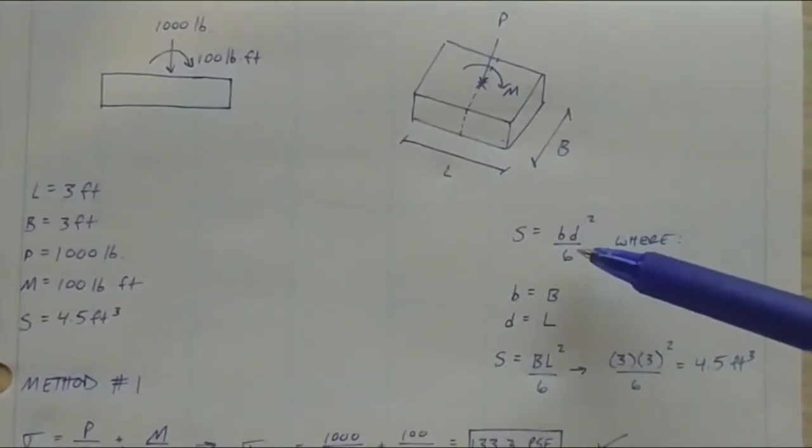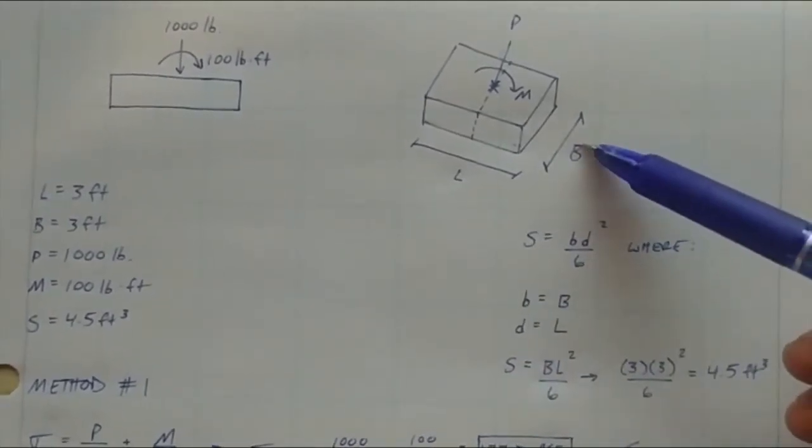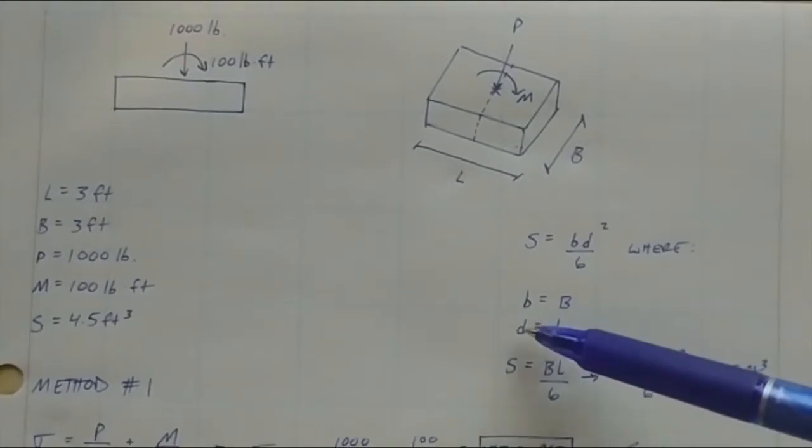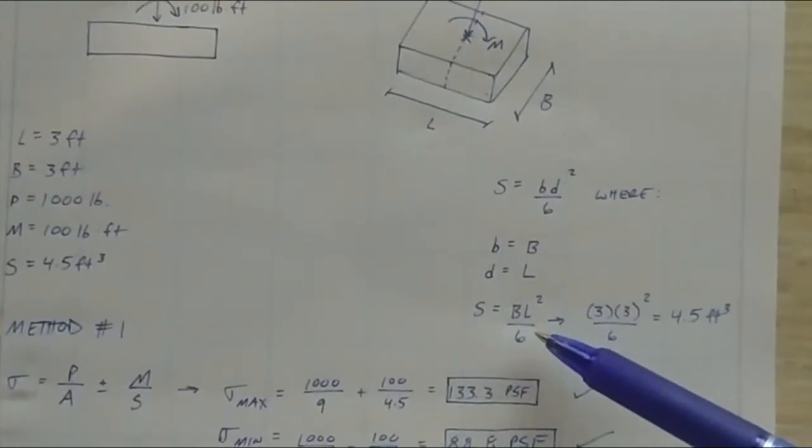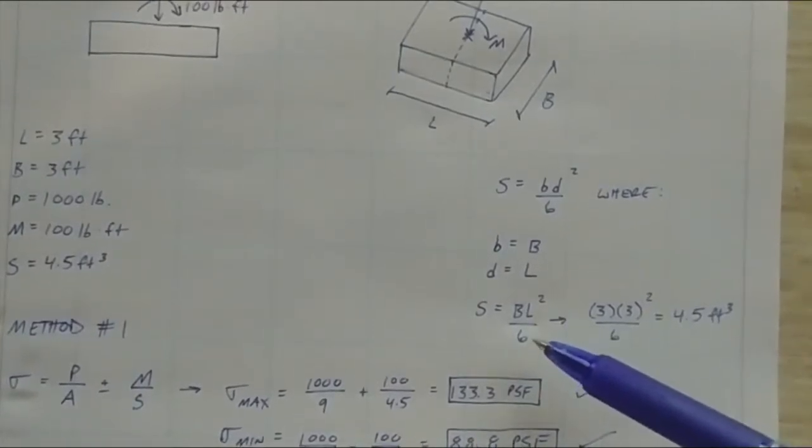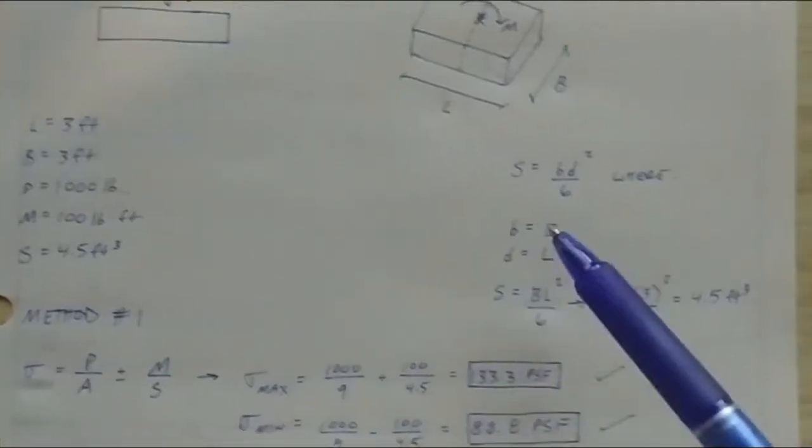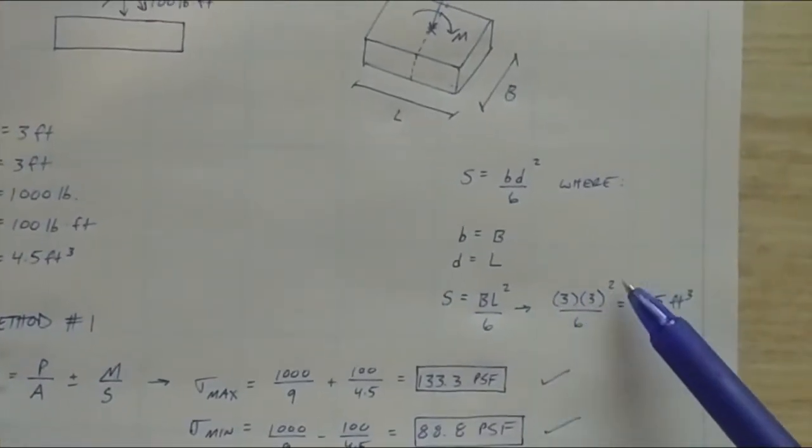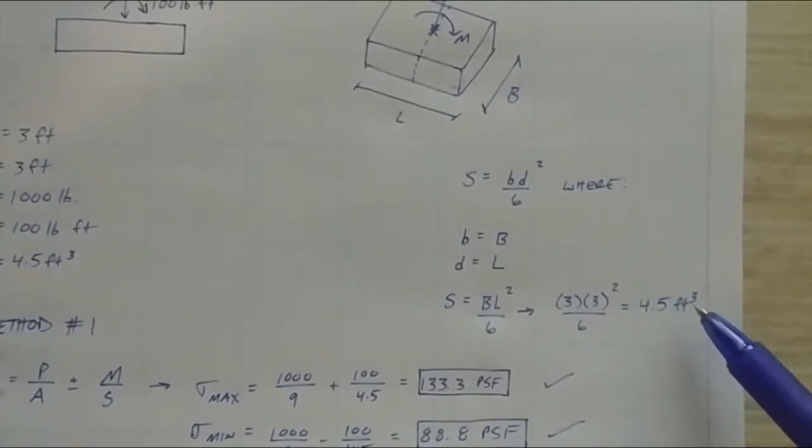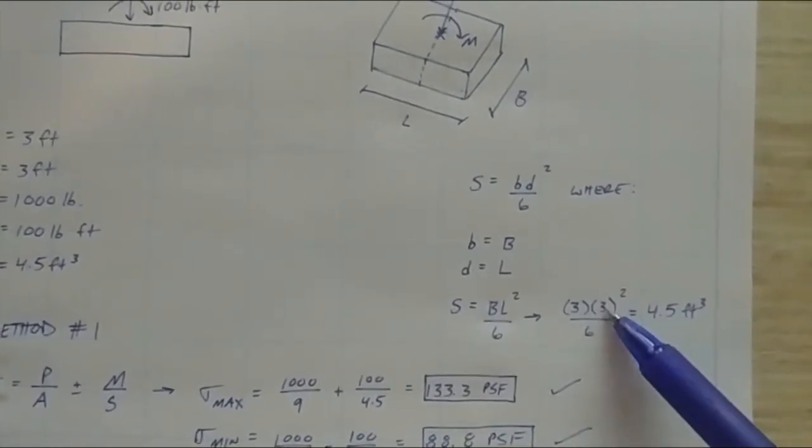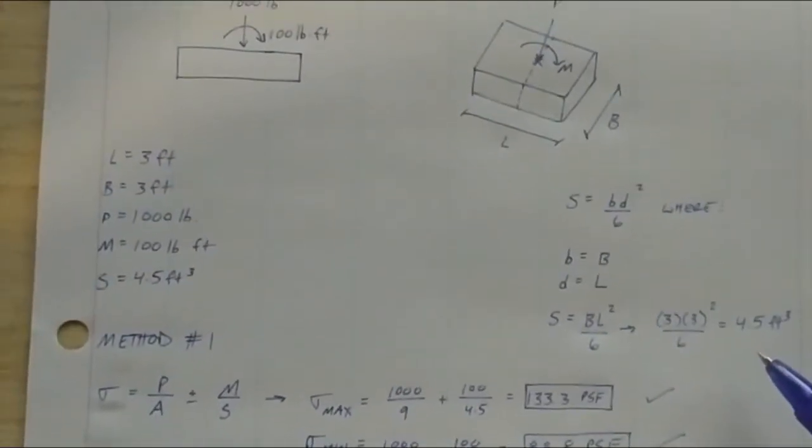First, we need our section modulus, which is going to be known as S. And that equation is, if you guys remember my last video talking about the steel manual, you can go into the back tables, into the section properties of geometries. And you can pull that, because basically what we have here is you want to take your section modulus about this dashed line, about which the moment is acting. And it's the geometry of the face of the footing.